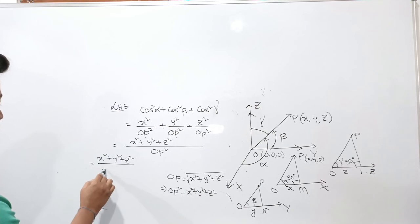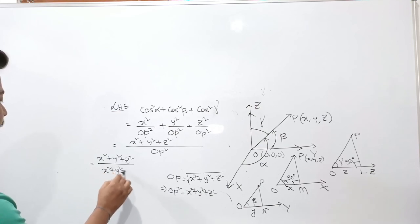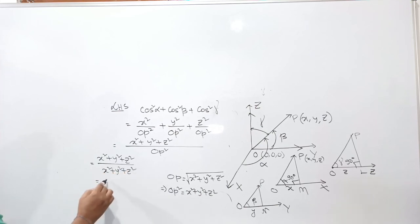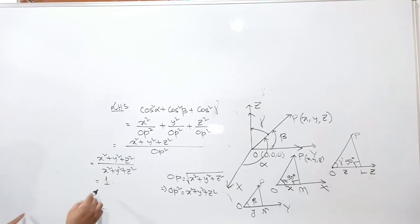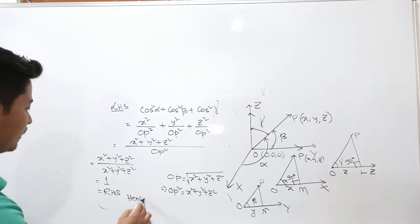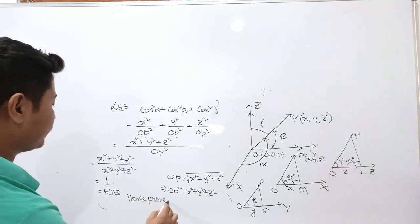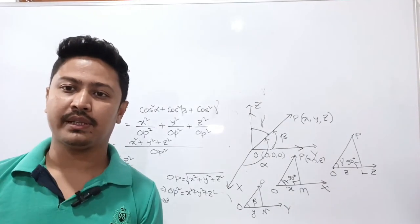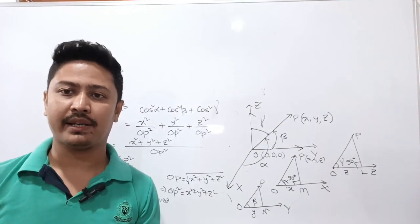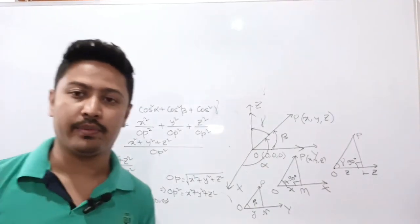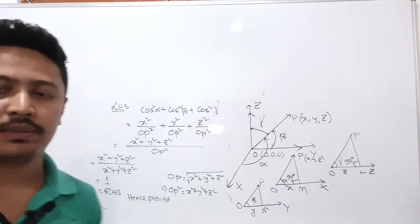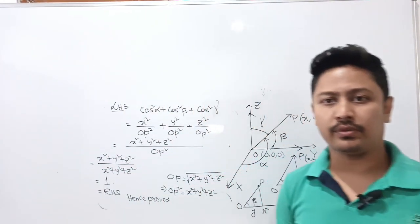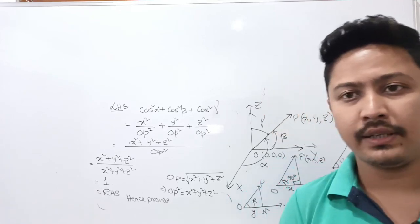By the distance formula, OP = √(x² + y² + z²), so OP² = x² + y² + z². Therefore (x² + y² + z²) / OP² = 1. Hence proved: cos²alpha + cos²beta + cos²gamma = 1. I hope that is clear. If you have any queries, please comment below. That's all for today.